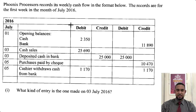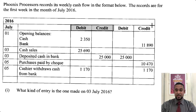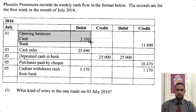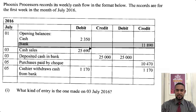So we're seeing debit and credit and it says opening balances. Cash — I'm seeing the 2,350 is in line with cash. The bank item has 11,890 on the credit side. What that implies is that bank has an overdraft. So you're going to need to deal with that.